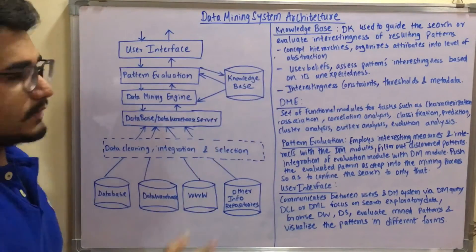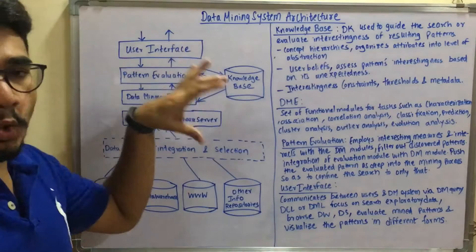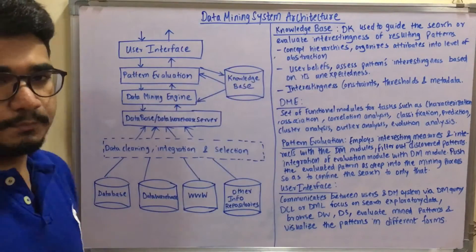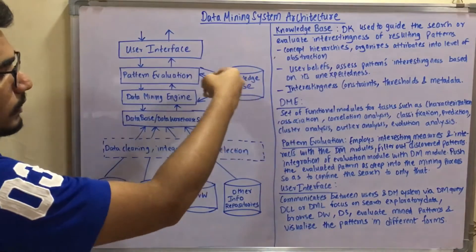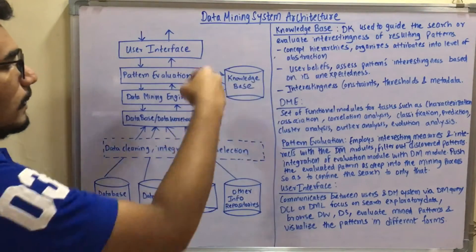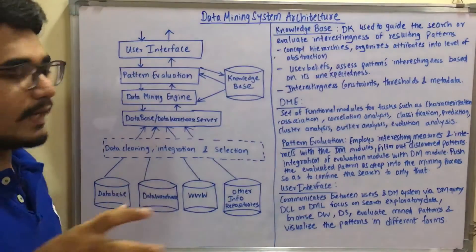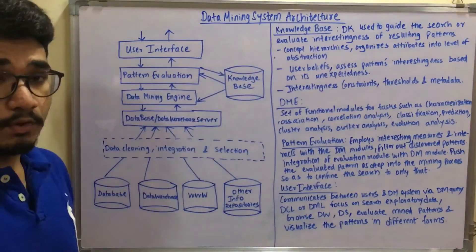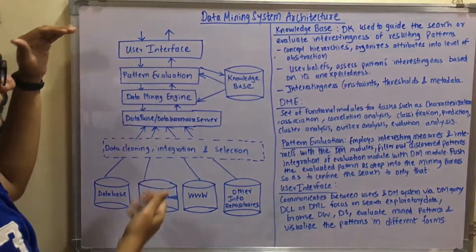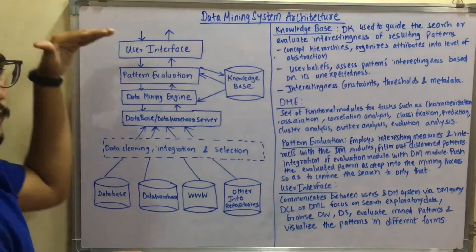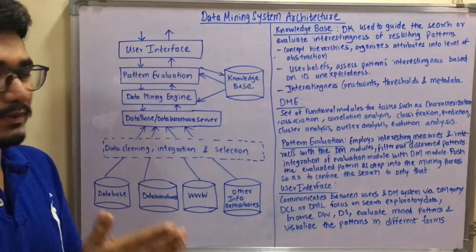Then you have the knowledge base. This contains domain knowledge such as past experiences, reference materials, current data, or past history that you need to refer to. All these things can be extracted or referenced from the knowledge base and used in this architecture. That's a quick overview of what a typical data mining system architecture looks like.